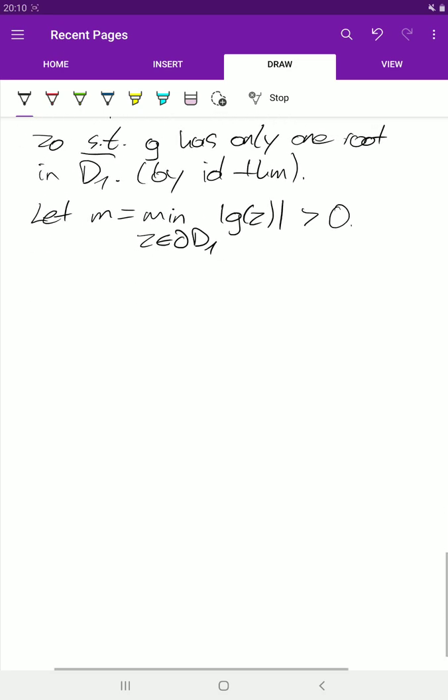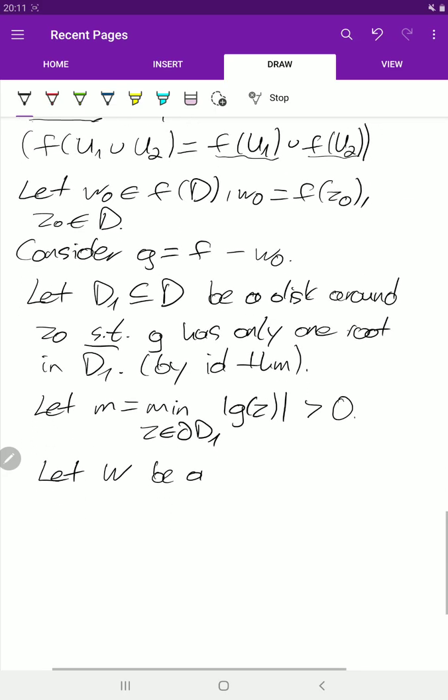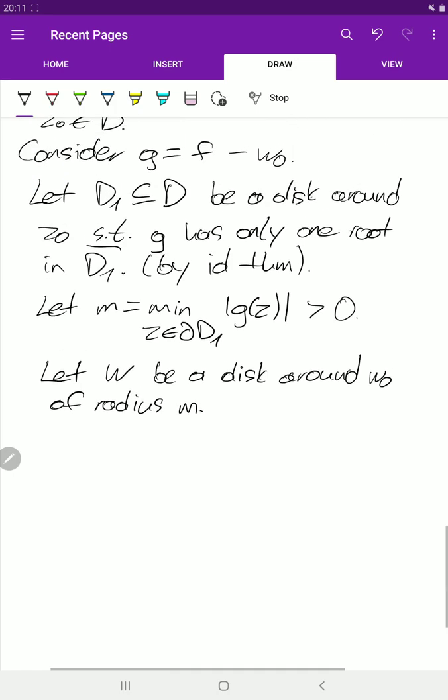And now we take W to be a disk at the other side. This disk here is a subset of D, and now we take a disk around w0 of radius M.